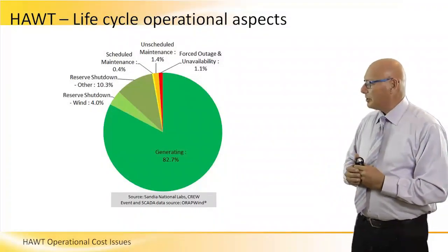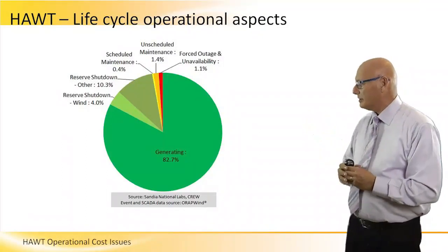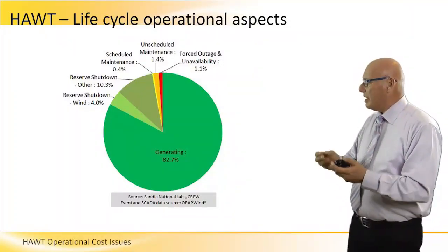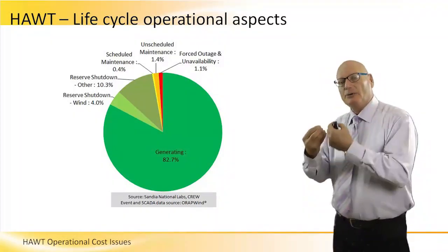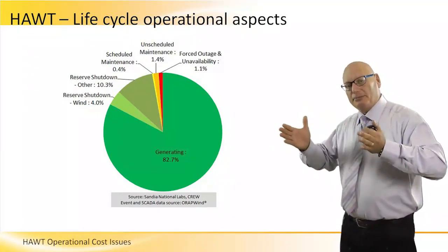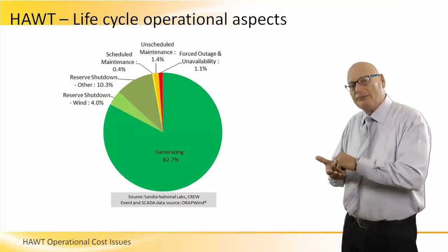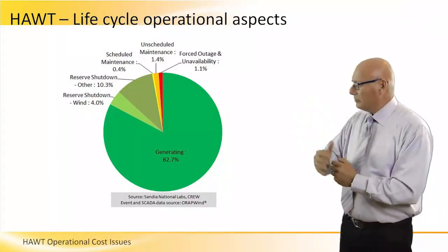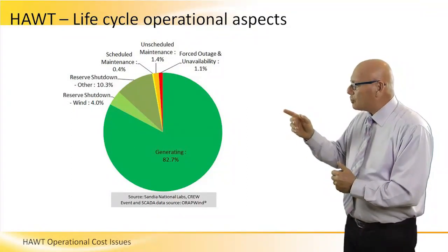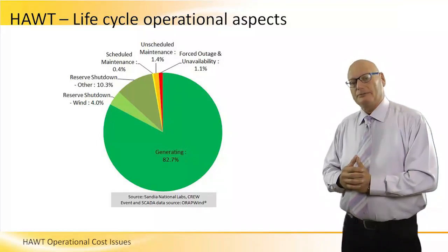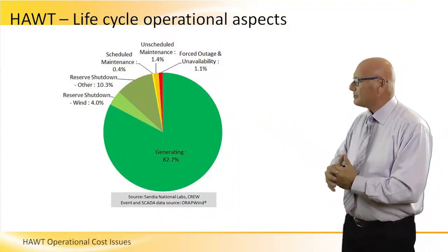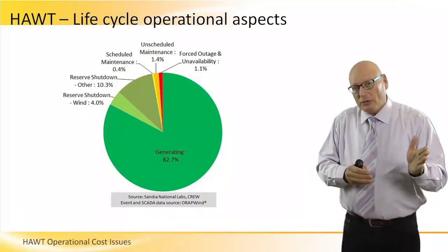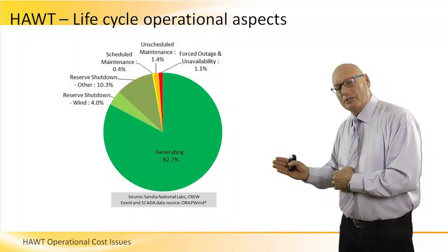This pie chart demonstrates the life cycle operational aspects of a wind turbine — this is just an example. The large green area represents 82.7% generation of electricity. So if the turbine operates 100% of the time, it will actually generate electricity 82.7% of that time. The reserve shutdown due to wind is 4% — that's the amount of time the wind is below cut-in speed or above the cutout speed.